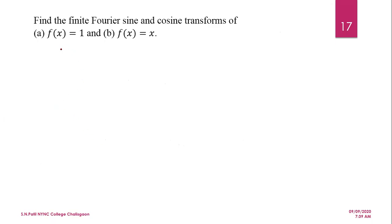Let us discuss problems on finite Fourier sine transform and finite Fourier cosine transform. We have taken two examples: in the first example f(x) = 1, and in the second example f(x) = x. We first find the sine transform of both functions.